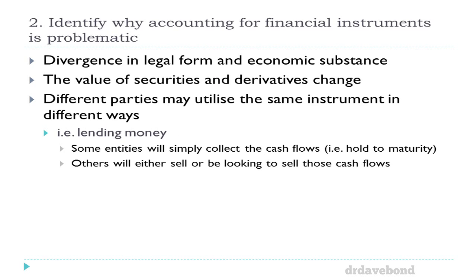Why is accounting for financial instruments problematic? First, there's a divergence in legal form and economic substance. Just because I call something a preference share doesn't necessarily mean it's equity — we're looking at the actual economics of it. When we get to the definitions of financial asset, financial liability, and equity instrument, we see how things should be classified. We know share prices and bond values go up and down, and derivatives change in value based on changes in the underlying instruments. That means we have to account for those changes — do they run through profit, through OCI, or do we ignore the change?